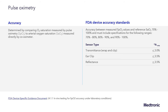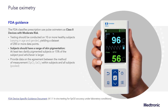The FDA classifies prescription use pulse oximeters as a class 2 device with moderate risk. The recommendations for testing of these devices in development require that testing should be conducted on 10 or more healthy subjects in varying age and gender, yielding a data set of 200 or more data points. Those subjects should have a range of skin pigmentation, at least two that are darkly pigmented in the group of 10, or if the sample size is larger, 15 percent of the subject pool. We must also provide data on agreement between the method of measurement — the difference between SpO2 and SaO2 — within those subjects and all subjects that are pooled.